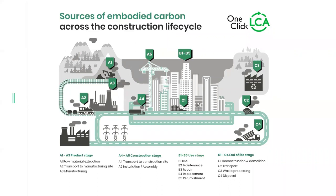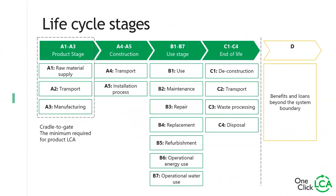Now let's look at which life cycle stages we're going to measure in the software. For a normal building LCA, A1 to A3 is always mandatory — this is the cradle to gate and is also the minimum requirement for product LCA. When doing a building LCA assessment and trying to find the right resources, we're usually getting EPDs, which have to at least have A1 to A3 — raw material supply, transport, and manufacturing. Some of the other life cycle stages are included with certain certifications but not all. Outside of A1 to C4, we also have the D phase — benefits and loads beyond the system boundary — which are represented on the result page of our software but not always mandatory for certifications.